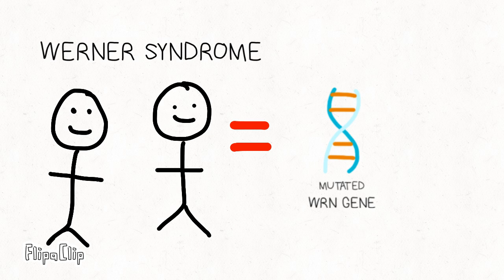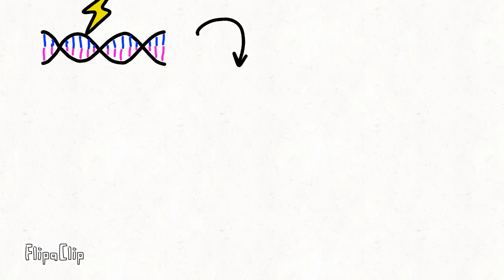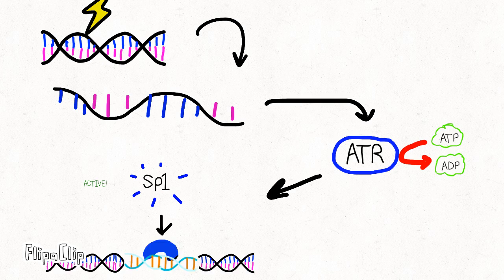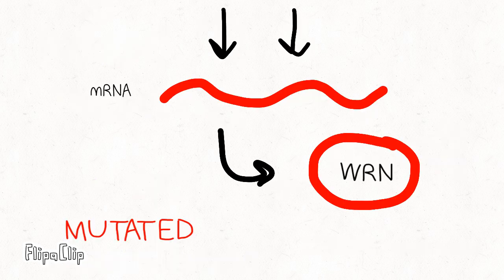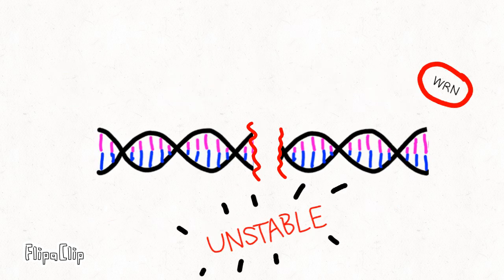However, in Werner syndrome patients, there is a mutation in the Werner gene due to the production of a stop codon from a genetic mutation. In this case, when DNA is damaged, mutated Werner proteins are created instead of the normal ones. These mutated Werner proteins aren't able to detect the damaged DNA.